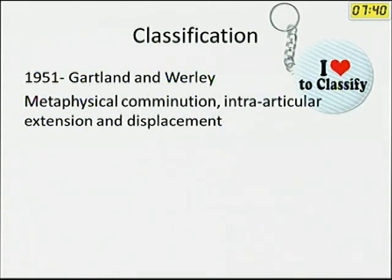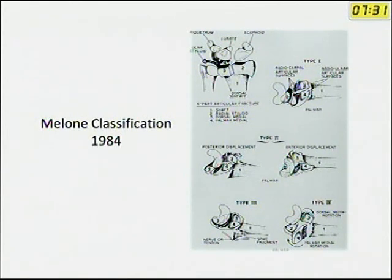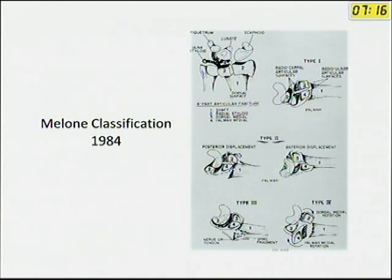There are various classification methods. Gartland and Wohle were the first to classify in 1951. Another important classification is the Mellon classification, which classifies fractures depending upon the involvement of various fragments. There are four fragments: the radial shaft, radial styloid, volar ulnar corner, and dorsal ulnar corner. Depending upon the type of involvement, there are different fracture types.